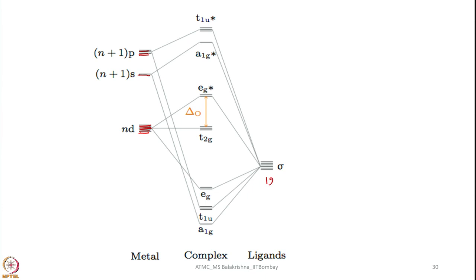So we have a total of 12 electrons that have to be accommodated. Let us not worry about how many electrons we have in the D orbitals of the transition metal — that is immaterial now. The 12 electrons coming from 6 ligands as 6 pairs will be placed here.